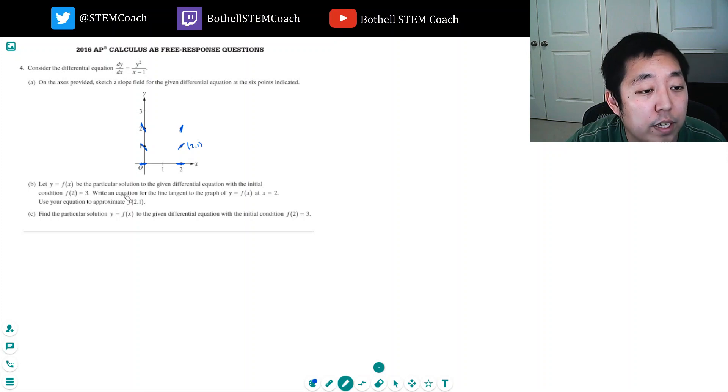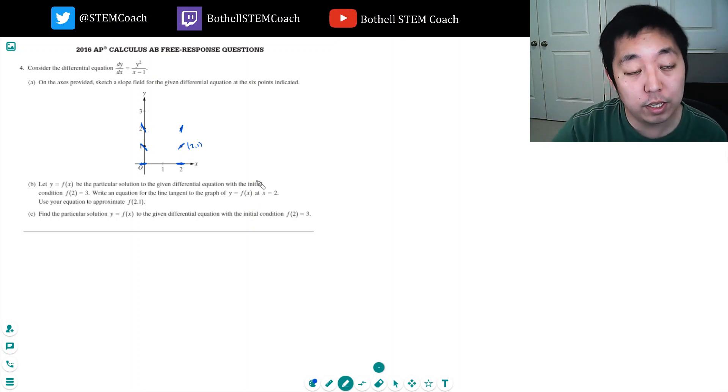Let y equals f(x) be the particular solution to the differential equation with initial condition f(2) equals 3. Write an equation for the line tangent to the graph at y equals f(x) at x equals 2 and use your approximation. Okay, so I need equation of a line.